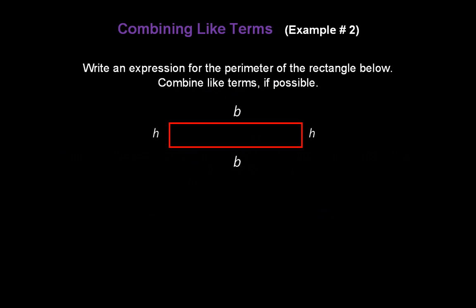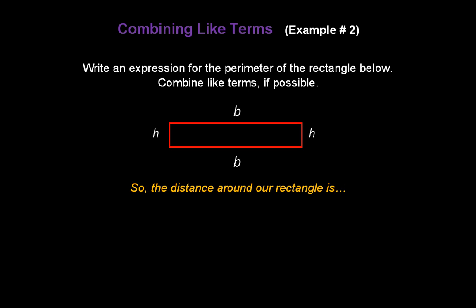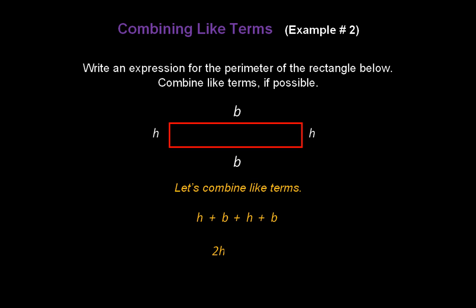Now let's write an expression for the perimeter of the rectangle below and combine like terms if possible. Perimeter is the distance around an object. Going around the rectangle: h on the left, plus b on the bottom, plus h on the right, plus b on the top. Combining like terms, the two h's combine and the two b's combine, giving us a perimeter of 2h plus 2b.